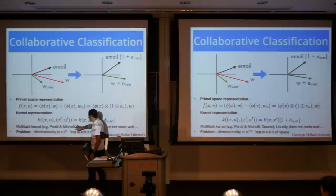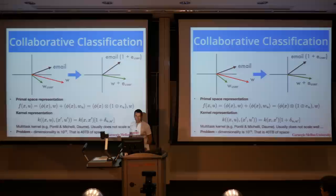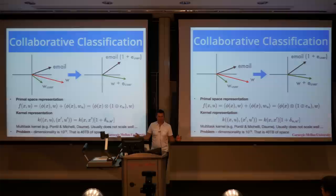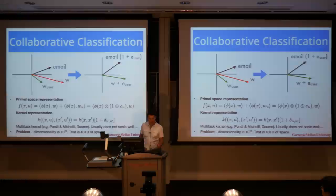This is a fairly well-understood and old idea. Pontell and Michelli proposed this about a decade ago, and Heldorm wrote a beautiful paper about embarrassingly simple multitask learning with a 10-line Perl script, explicitly constructing this representation. That's cool if the number of tasks is like 10. But we have hundreds of millions of tasks — each user has his own task. Even in a benign case, we're talking about 40 to maybe 100 terabytes of possible parameter space, so you cannot possibly hope to solve this.